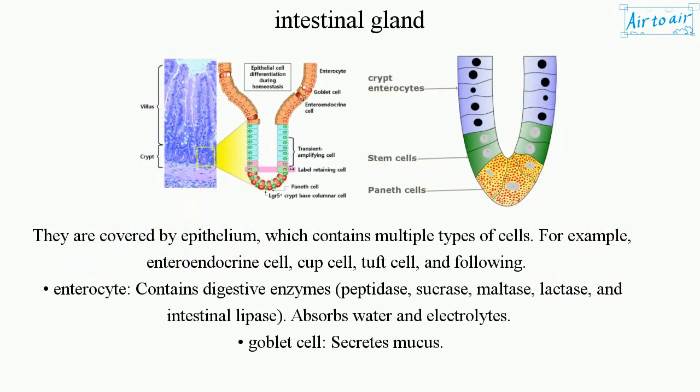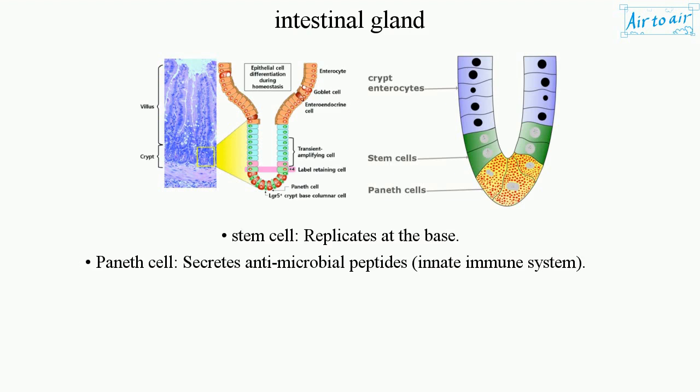They are covered by epithelium which contains multiple types of cells — for example: enteroendocrine cell, cup cell, tuft cell. The enterocyte contains digestive enzymes (peptidase, sucrase, maltase, lactase, and intestinal lipase) and absorbs water and electrolytes. Goblet cell secretes mucus. Stem cell replicates at the base. Paneth cell secretes antimicrobial peptides for the innate immune system.